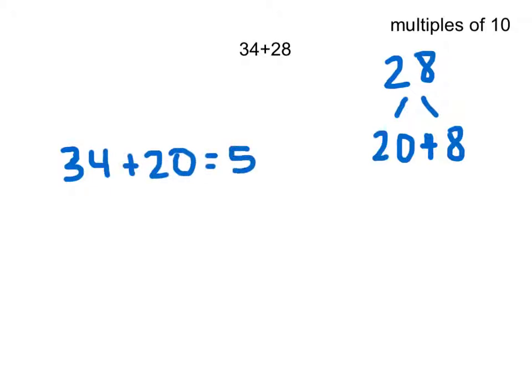First I have this 34 plus 28. Well I know that 28 can be broken down into 20 plus 8 by decomposing it. If I have 34 and I add 20, I know that I'm going to get 54. 34, 44, 54.